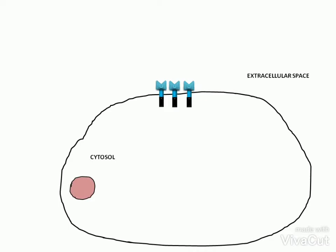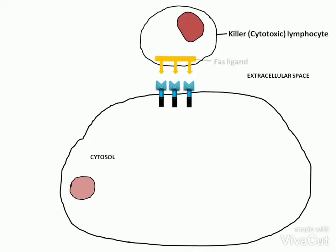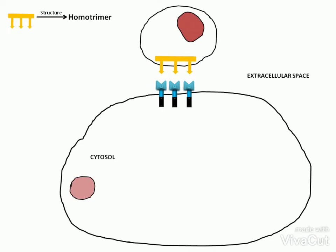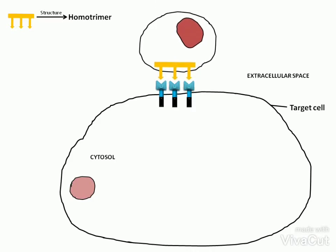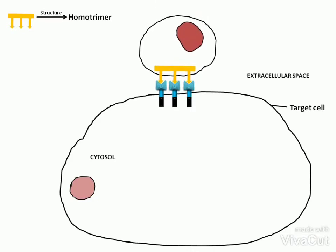The killer or cytotoxic lymphocyte contains FAS ligand. The FAS ligand is structurally a homotrimer. The FAS ligand binds to the FAS death receptor on the surface of the target cell and activates it. This binding triggers the extrinsic pathway of apoptosis.